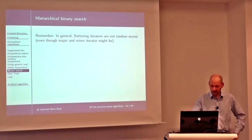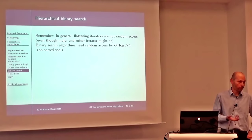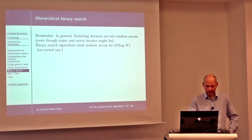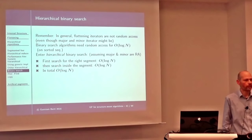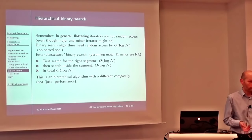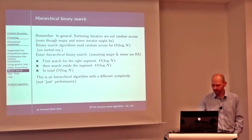Binary search: our flattening iterators are not normally random access, and we need random access for logarithmic behavior of binary search, which also requires a sorted sequence. A hierarchical version is quite simple: first search the right segment, then search the right position within that segment — two times log N, total still O(log N). This is an example where the difference is not just a factor of four or eight but an actual difference in computational complexity.